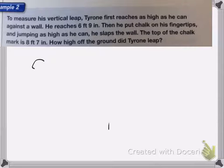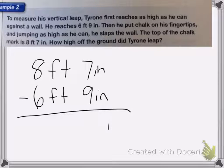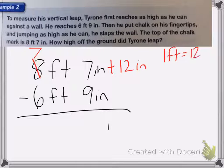So I want to figure out how high he actually jumped. So I'm going to take the eight feet, seven inches and subtract the six feet, nine inches that he could reach without jumping. In this case, I need to borrow. So I'm going to borrow one from the eight, eight becomes a seven. Now I need to add 12 inches to the seven inches I already have, because one foot equals 12 inches. So seven inches plus 12 inches is equal to 19 inches.